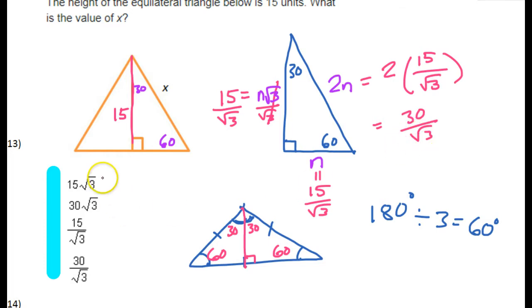Now, none of the answers... Whoa! I started to say none of the answers say 30 over radical 3. But there it is right there. I'm not sure why I started to say that. So the answer should be this last one. So to me, that's the quickest way to find the answer.